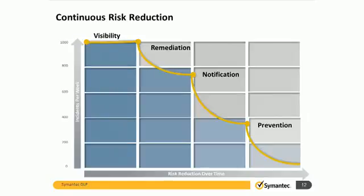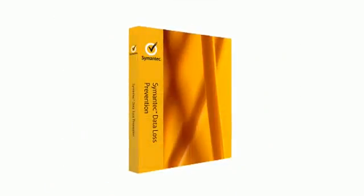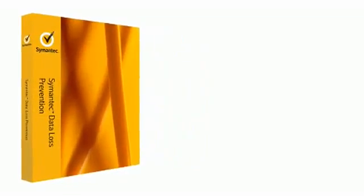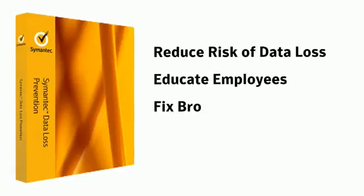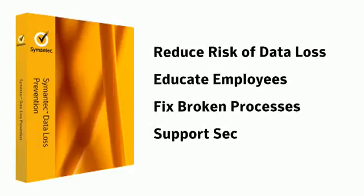With visibility, remediation, and notification, you will whittle down the number of incidents. The last step is prevention — stopping data from inappropriately leaving your network. Through a combination of blocking, quarantining, and conditional modification, Symantec DLP provides the tools to prevent data loss at every egress point. In summary, Symantec DLP can significantly reduce the overall risk of data loss. We help security teams to enable the business side by educating employees, fixing broken business processes, and supporting business activity to occur securely.